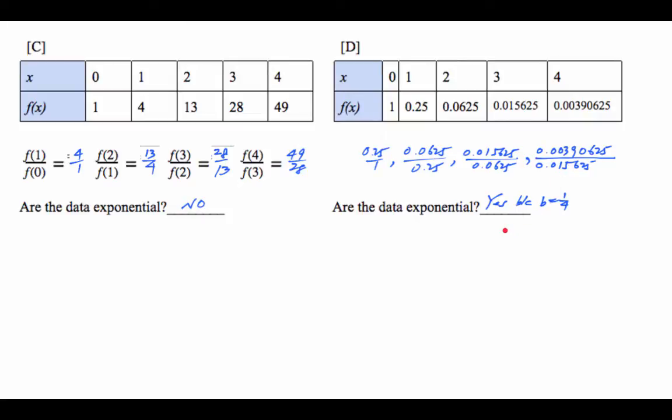So we know that this is an exponential function because b is 1/4. The b, in our case, is the common ratio that we saw in geometric sequence.